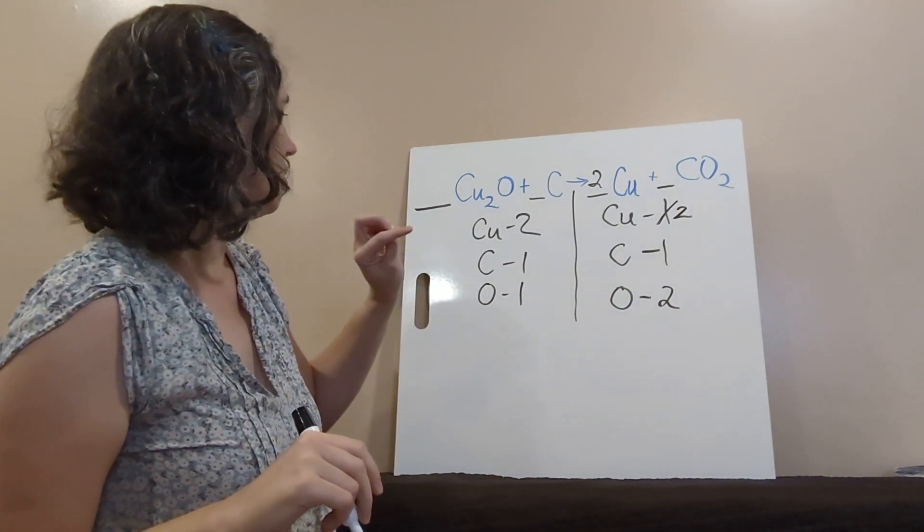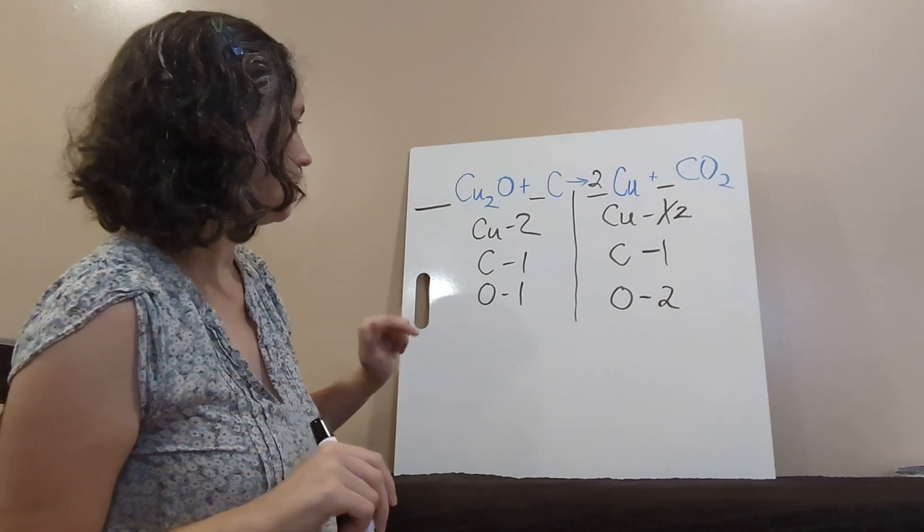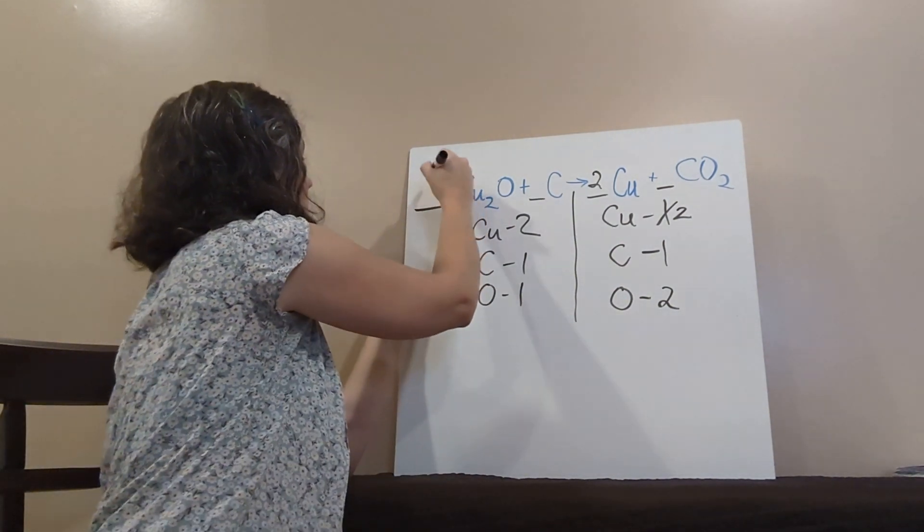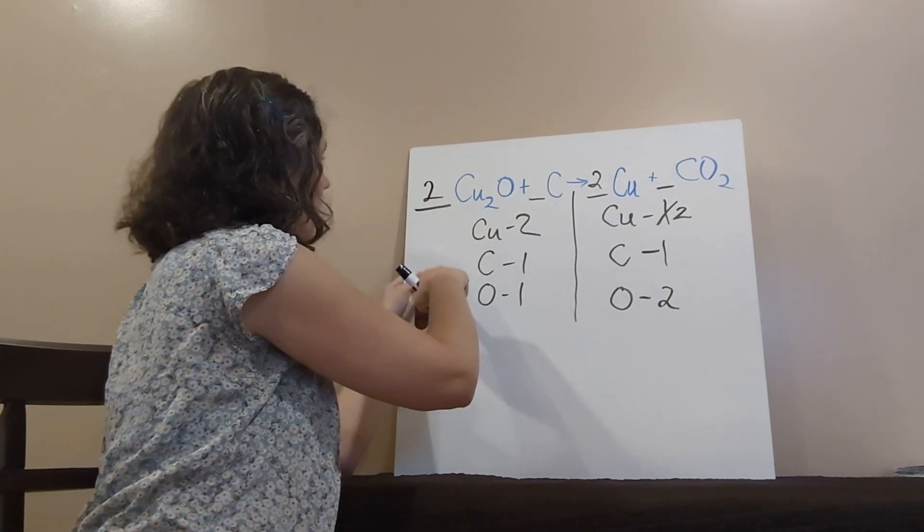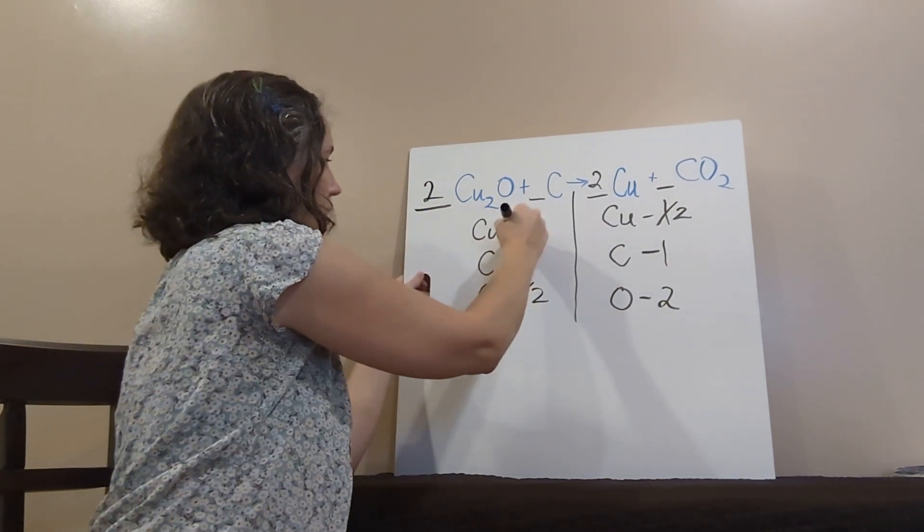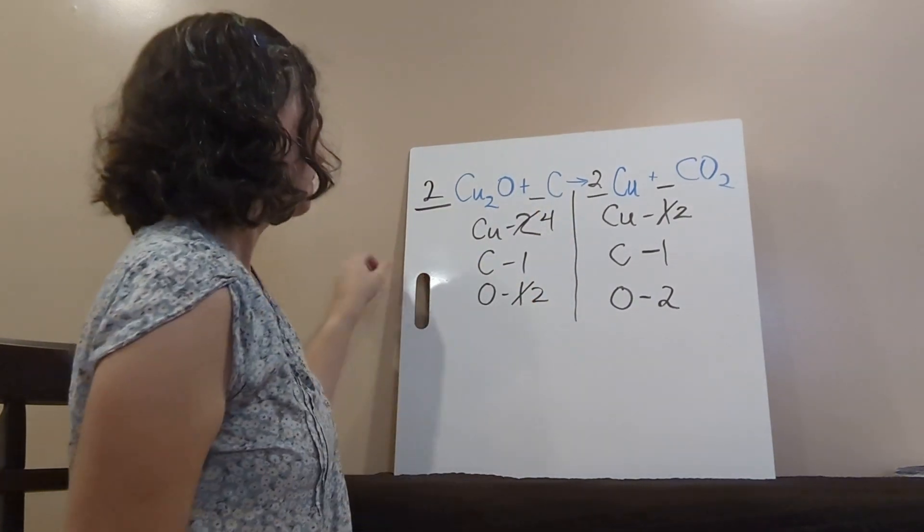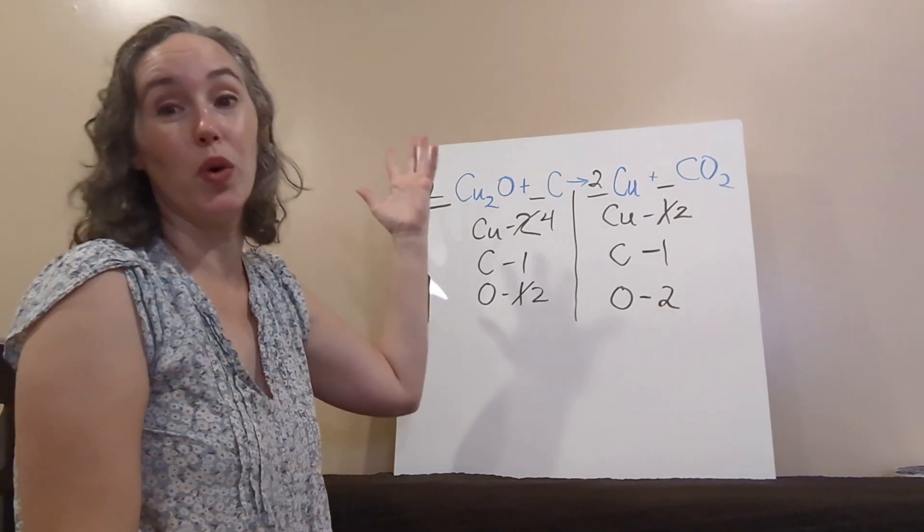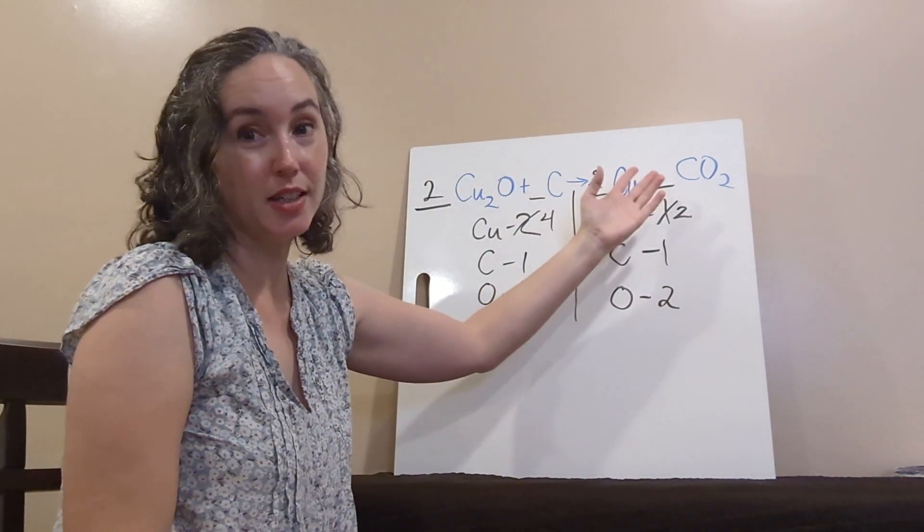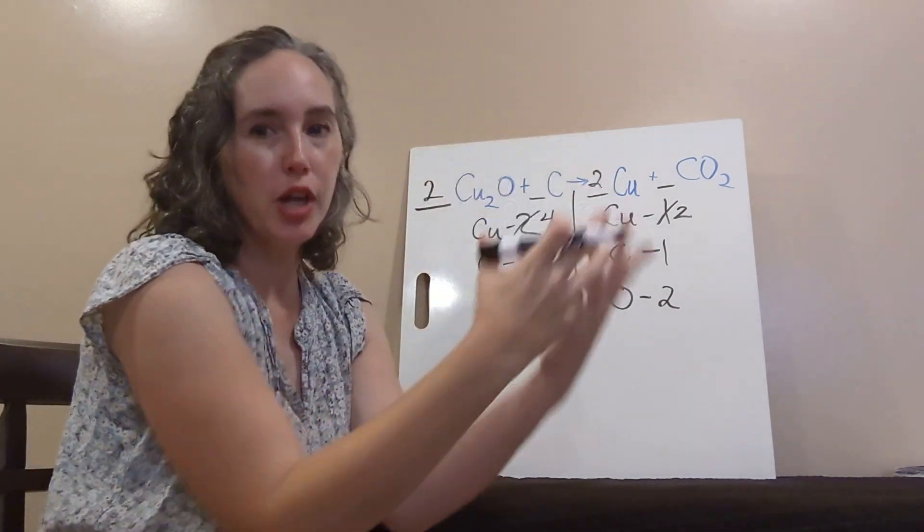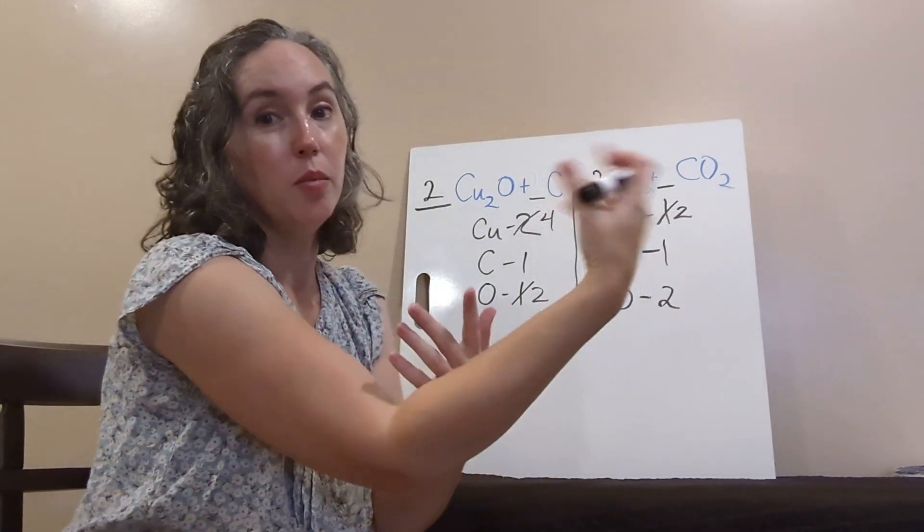And now, my oxygens are still unbalanced. I've got two over here, one over here. So, I can make this two as well. And now, I've got two oxygens, but my coppers are now four. So, I'm going to have to undo something I did before. But it's not really undoing. It's just like changing and using reasoning and moving forward.